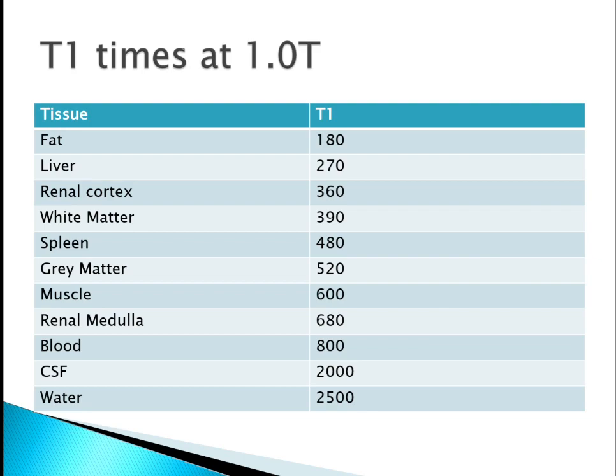These are the T1 values for various tissues at one Tesla MRI: fat 180ms, liver 270ms, renal cortex 360ms, white matter 390ms, spleen 480ms, gray matter 520ms, muscle 600ms, renal medulla 680ms, blood 800ms, CSF 2000ms, and water 2500ms. In T1 weighted images, tissues with long T1 appear dark and tissues with short T1 appear bright.